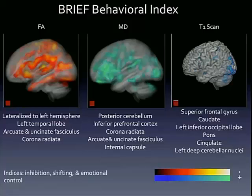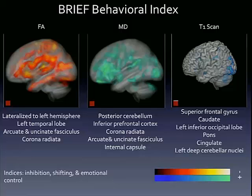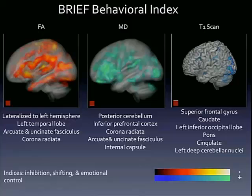For both the BRIEF behavioral index and the BRIEF metacognition index, the color key is reversed — red and orange represent negative, and blue and green represent positive — but this is representative of better abilities. For example, with the BRIEF behavioral index, it's representative of better inhibitory abilities, shifting, and emotional control. You can see that we have everything isolated on both the white matter organization and the diffusivity images to the left ventrolateral prefrontal cortex. These areas are associated with greater inhibitory control and greater set shifting abilities, as well as emotional control, which together support those findings.